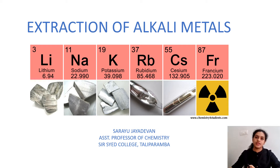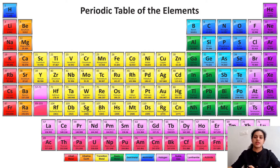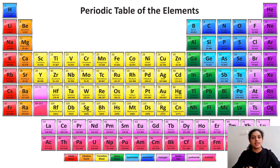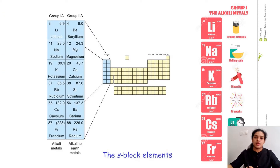Good morning. Today's topic is the extraction of alkali metals. This is the periodic table of elements, where the elements are arranged in increasing order of their atomic number. For convenience, we study the elements, groups, compounds and their properties by classifying them into four main blocks: S, P, D, and F. This classification is based on which subshell the valence electron or differentiating electron enters.